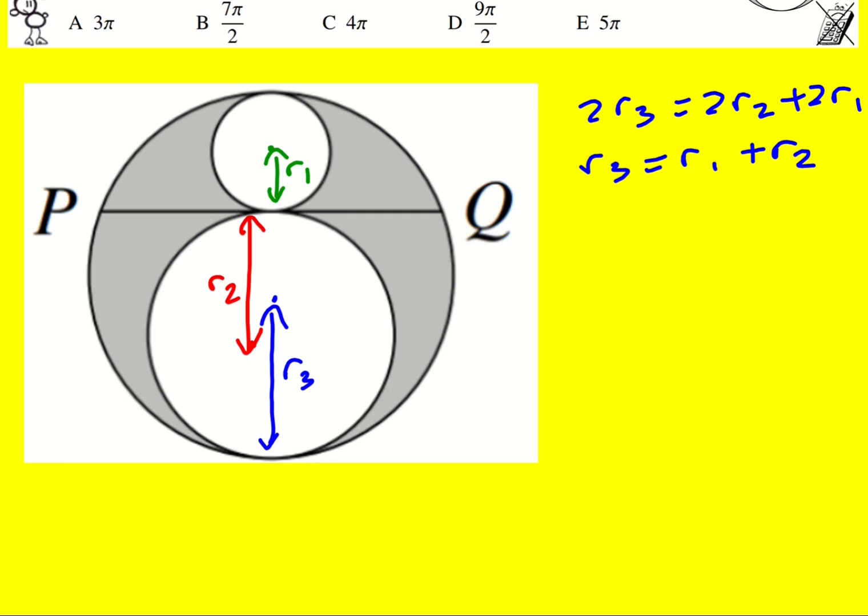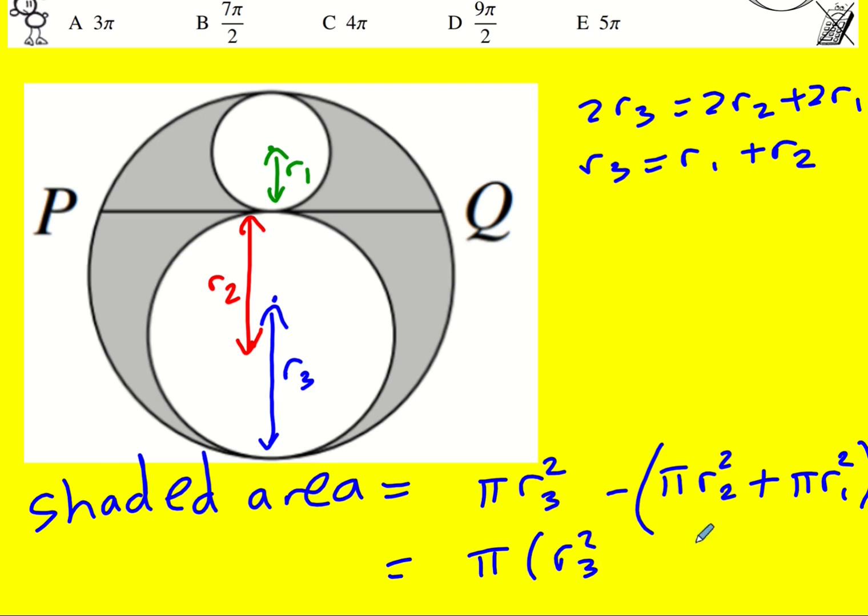And we're trying to work out this shaded area. So in fact, the shaded area is going to be pi R3 squared, that's all of the area inside, minus pi R2 squared. I need to subtract this bit here and I need to subtract that bit. I could even factorize out the pi and write it as R3 squared.